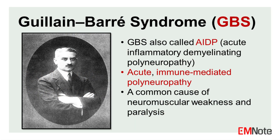Guillain-Barré syndrome, also called Acute Inflammatory Demyelinating Polyneuropathy (AIDP), is a common cause of neuromuscular weakness and paralysis due to a rapid-onset immune-mediated polyneuropathy.